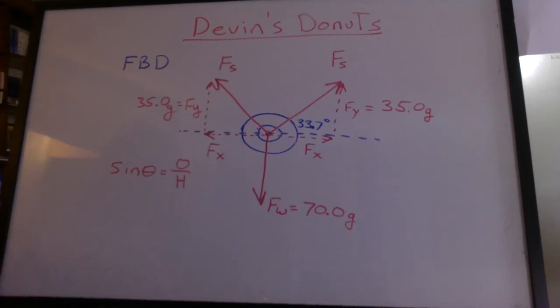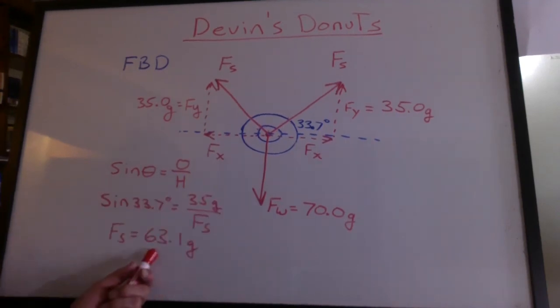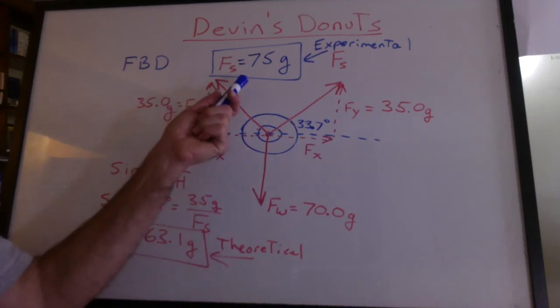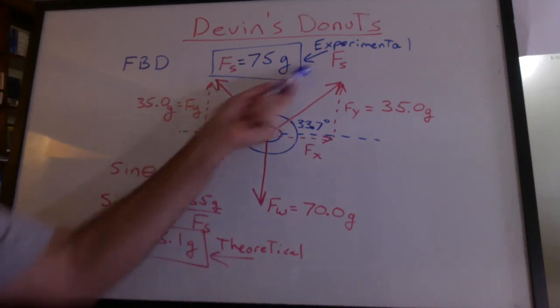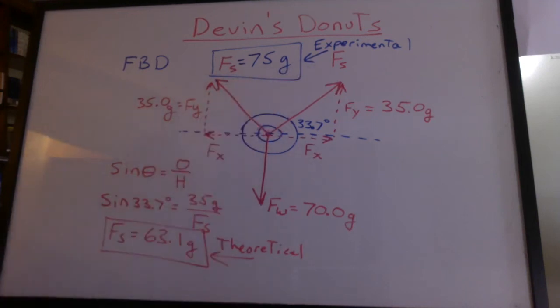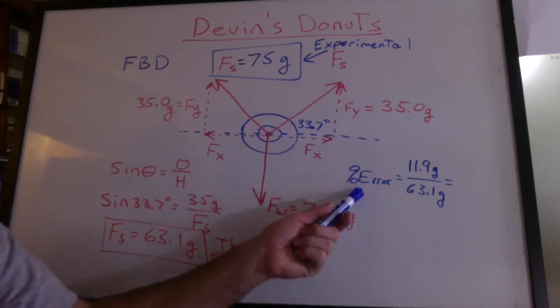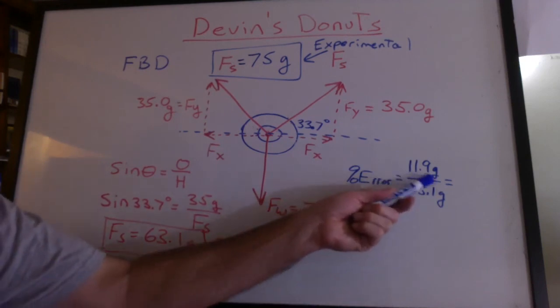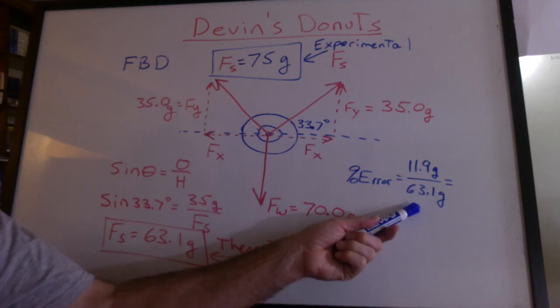Using sine, plug in the values. And we're calculating 63.1 grams. That's a theoretical value. We actually saw the spring scale read 75 grams. Well, then that's an experimental value.